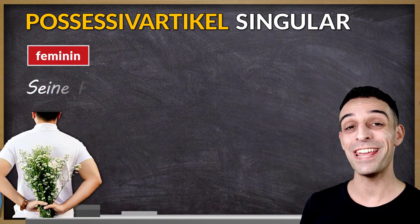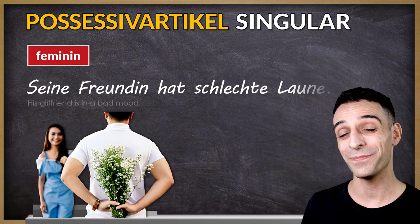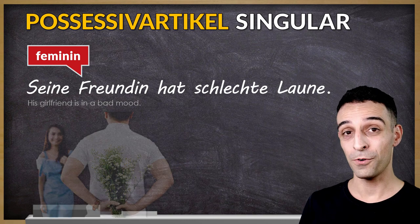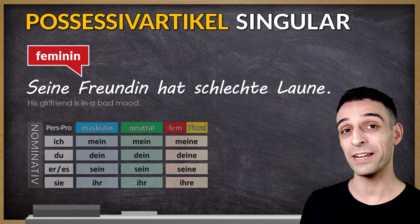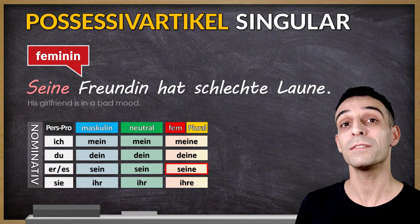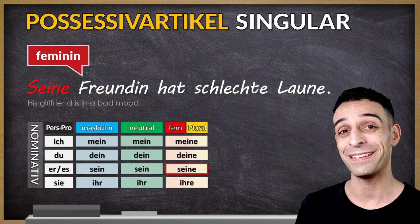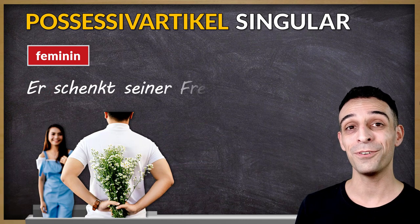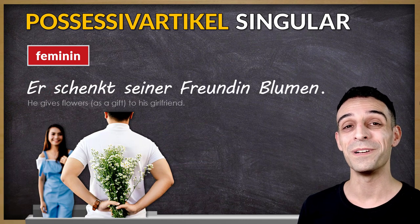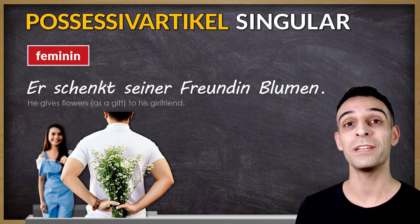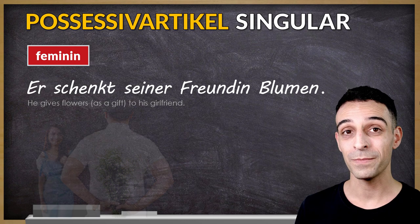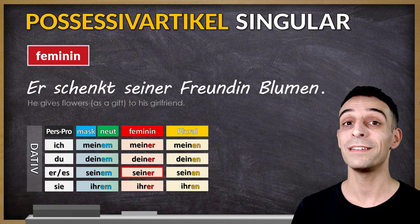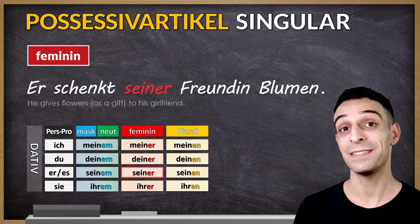Seine Freundin hat schlechte Laune. Freundin is the subject, so nominative case: seine. Er schenkt seiner Freundin Blumen. Now Freundin is the indirect object, dative: seiner.